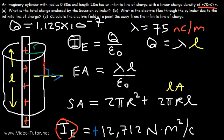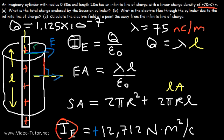At the top surface, the electric field emanates away from the line of charge in the horizontal direction, while the normal line to the top circle is vertical — so the angle between the normal line and the electric field is 90 degrees. Since cosine 90 equals zero, the electric flux through the top and bottom circles is zero. There's no electric field vector passing through those surfaces, so we use only the lateral area 2πrL.